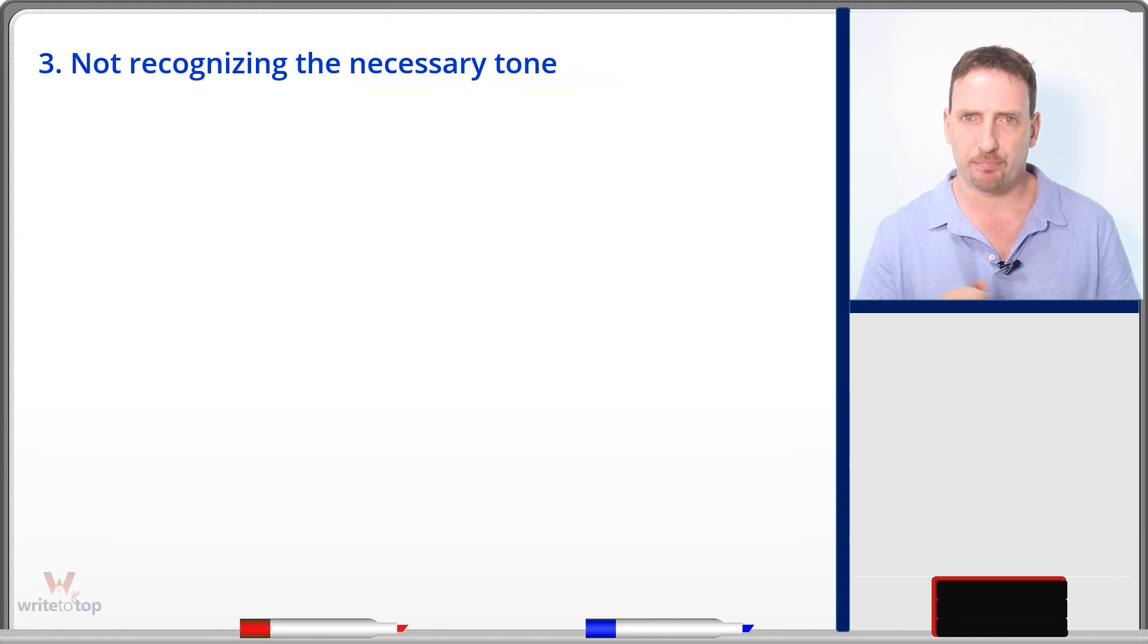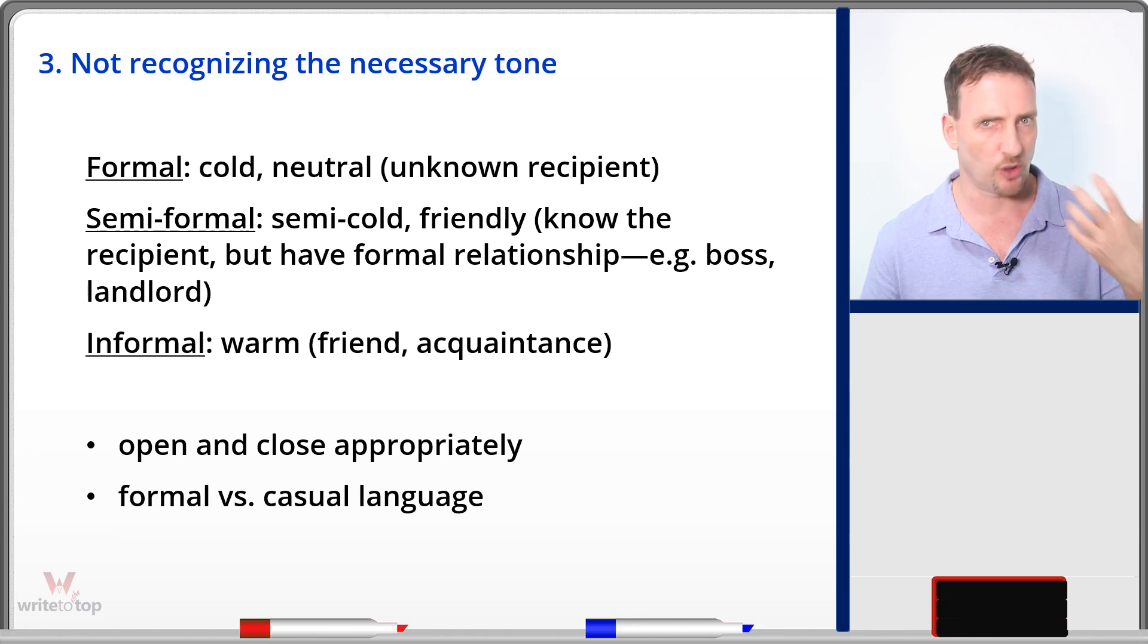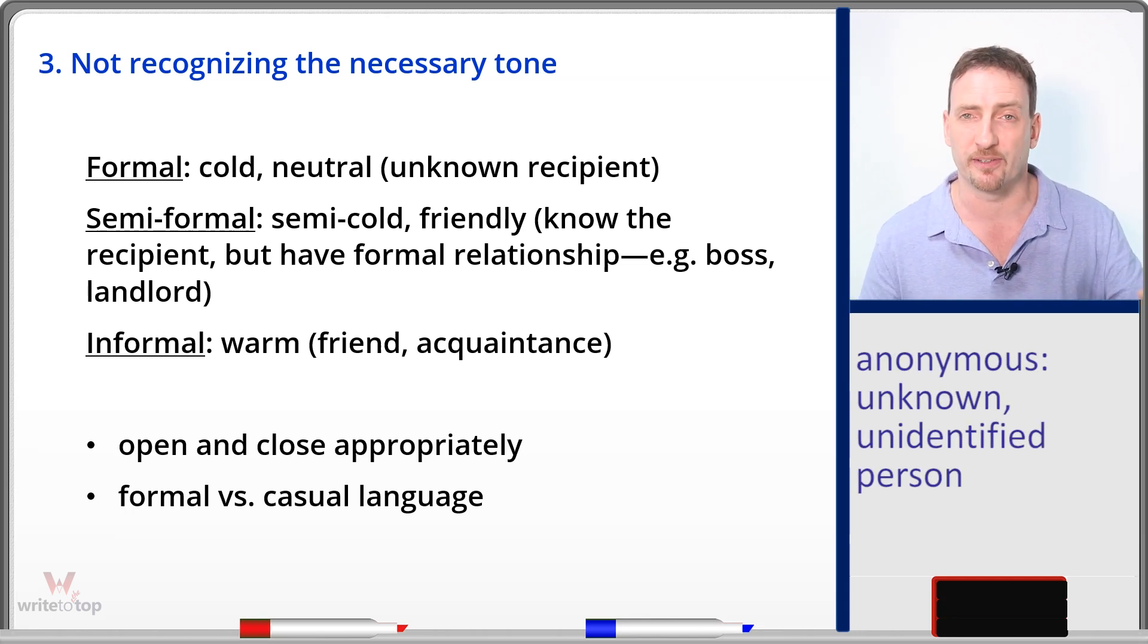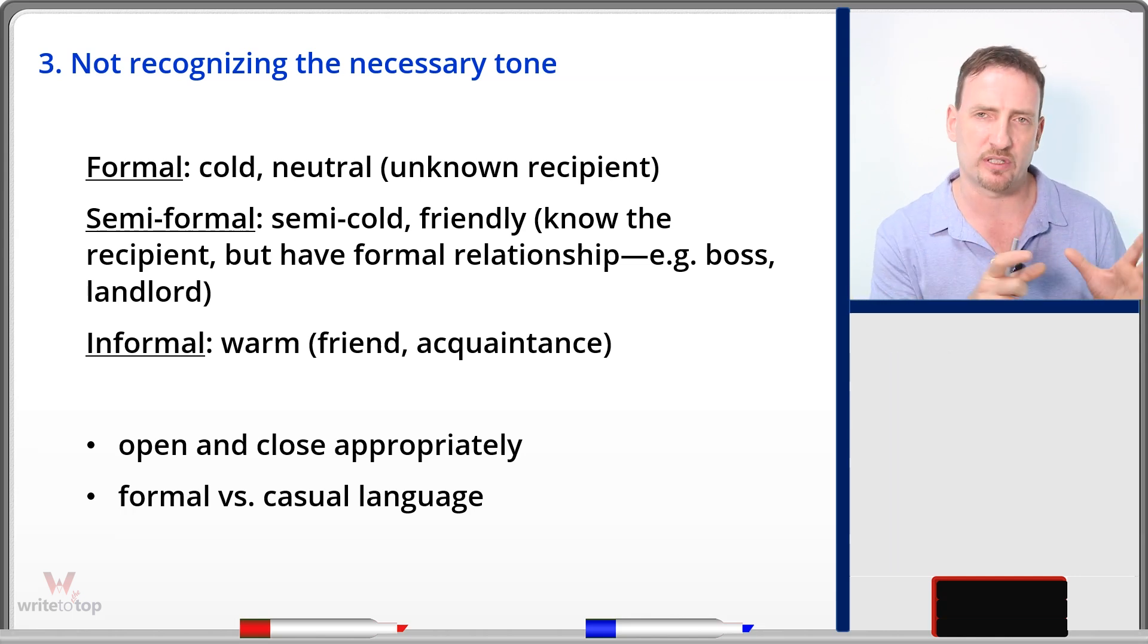Now, another thing that a lot of people have a problem with is recognizing the necessary tone. Is this a formal letter? Is this a semi-formal letter? Is this a casual or informal letter? Basically, think about who you're writing to. A formal letter is cold, and it's very neutral. There are no emotions involved. Generally, you don't know the person. This is why it's called a cold letter. You're introducing yourself, or you're writing to somebody you don't even know who is receiving it. It's just some anonymous person in a company or in a place. So the unknown recipient will always be formal.